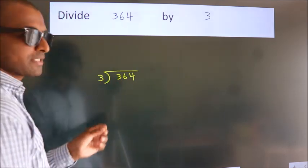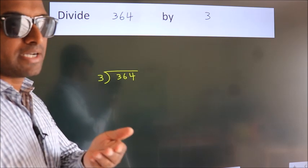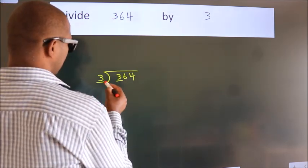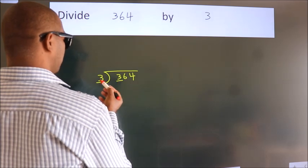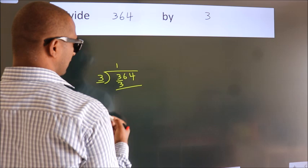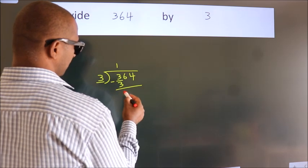This is step 1. Next. Here we have 3. Here 3. When do we get 3? In the 3 table, 3 ones is 3. Now we subtract. We get 0.